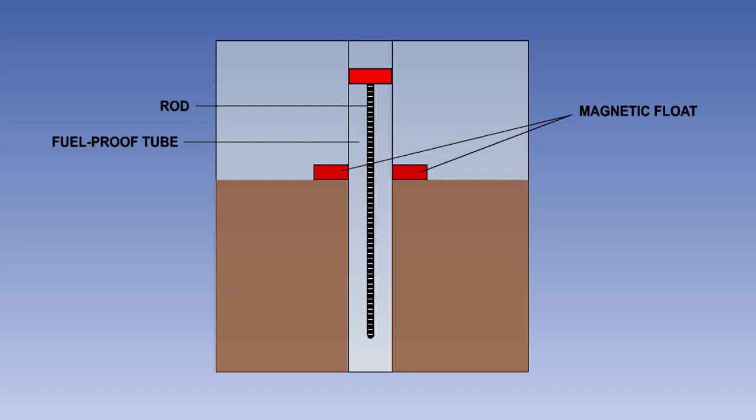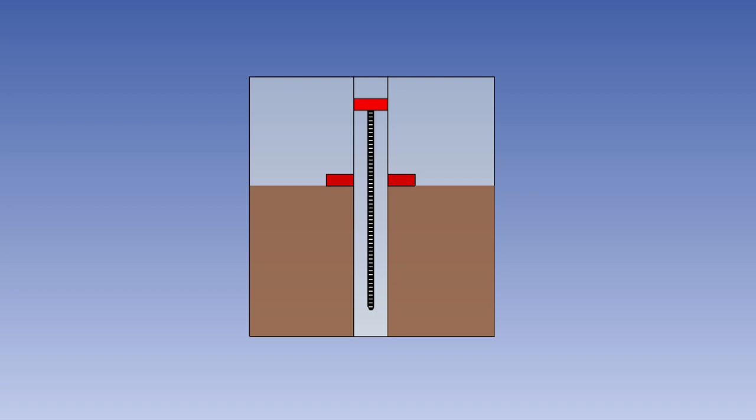Around the tube is a magnet supported on a float. The magnet moves up and down the tube with the fuel. The tip of the rod is also fitted with a magnet. When the rod is lowered through the tube, as the two magnets line up, their fields attract each other and resistance to further movement will be felt.